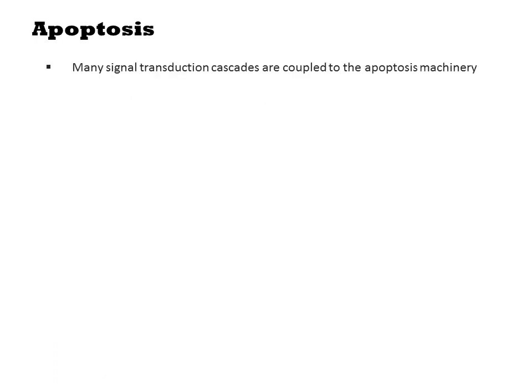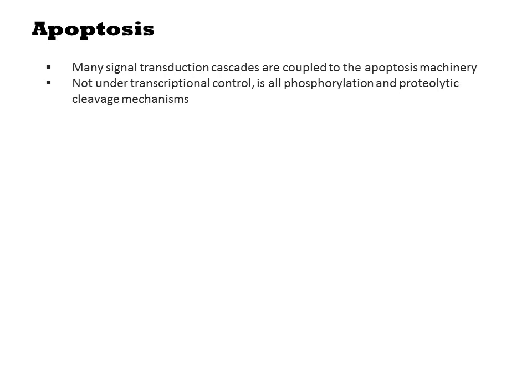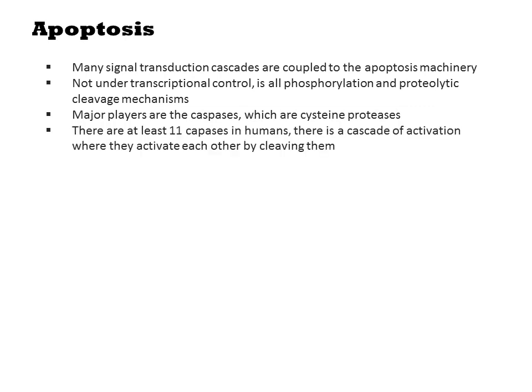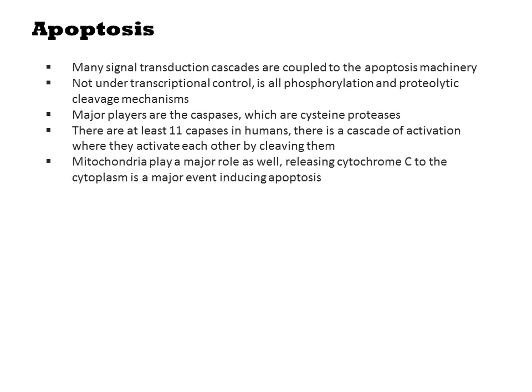Many signal transduction cascades are coupled to the apoptosis machinery. The proteins associated with apoptosis are not under dynamic transcriptional control — the events that trigger this system are all post-translational reactions involving phosphorylation and proteolytic cleavage mechanisms. The major players are the caspases, which are cysteine proteases that cleave other proteins associated with apoptosis and ultimately destroy the cell. There are at least 11 caspases in humans, with a cascade of activation where they activate each other by cleaving. Mitochondria play a major role as well — the release of cytochrome C to the cytoplasm is a major commitment step during apoptosis.